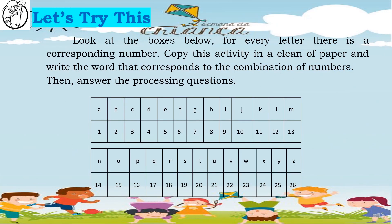For your first activity, which is the Let's Try This, you are going to look at the boxes below. For every letter there is a corresponding number. Copy this activity on a clean sheet of paper and write the word that corresponds to the combination of numbers. Then answer the processing questions.